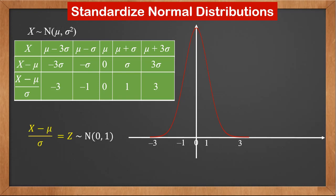Therefore, by applying the transformation x minus mu over sigma, any normal distribution becomes the standard normal distribution z. This process is called standardizing the normal distribution.